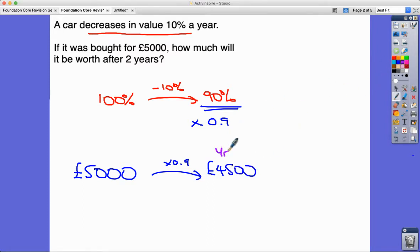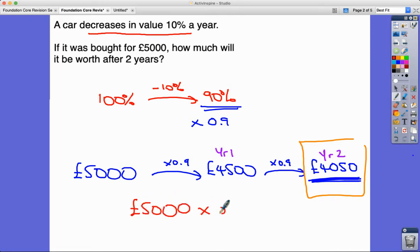That's after year one, but it's not just for one year, it's for two years running, so we're going to do it again times 0.9. 90% of that is £4,050 and that's our final answer. If you're really savvy with this, you can realize that actually all we've done is times by 0.9 times by 0.9, and multiplying something by itself is the same as squaring it, so all we've done here is times 0.9 to the power 2 for two years.